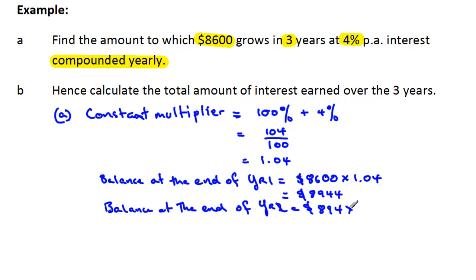So that's the balance that starts at the beginning of year two times that by 1.04. So that increases it by the amount of interest. And that comes to $9,301.76.